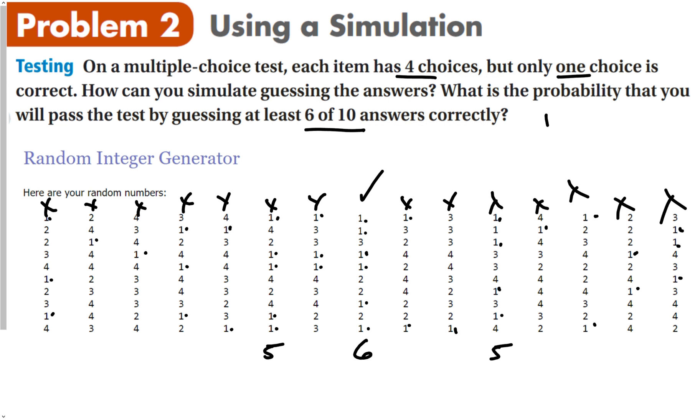So what is the probability that you will pass the test from our simulation? The calculation is going to be one out of one, two, three, four, five, six, eleven, twelve, thirteen, fourteen, fifteen. One out of 15, which is going to be 0.06 repeating, so 7%.